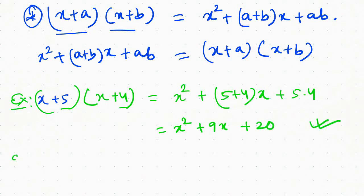So x squared plus 9x plus 20. It is good to do this example. So how do we factor x squared plus 9x plus 20?